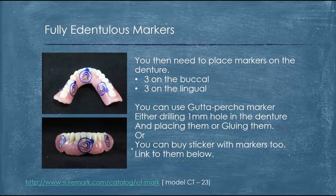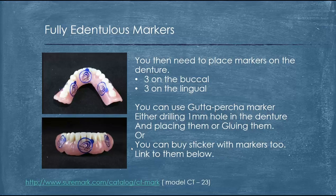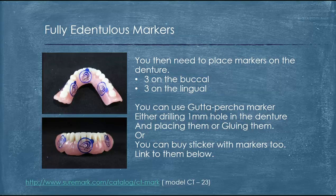Once the markers are placed, have the patient put the denture back in their mouth with the markers and take a CT scan. Make sure the denture is fitting properly — if you're not sure, you can use a cotton roll to have the patient bite down to confirm it's seated properly on the palate. Then you would also take a CT scan of just the denture by itself.